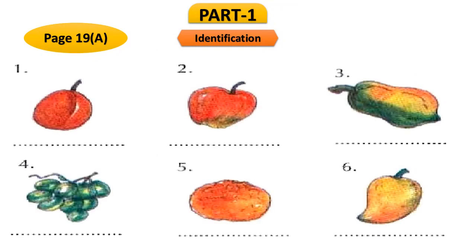Let's go to page number 19, where you will see pictures of some beautiful fruits and we need to identify them and write their names. The first picture looks reddish and the name of that fruit is peach. Picture number 2 is quite familiar — it is apple, which we love. In picture number 3 there is a local fruit we love — it is papaya. In picture number 4 the fruit is grape.